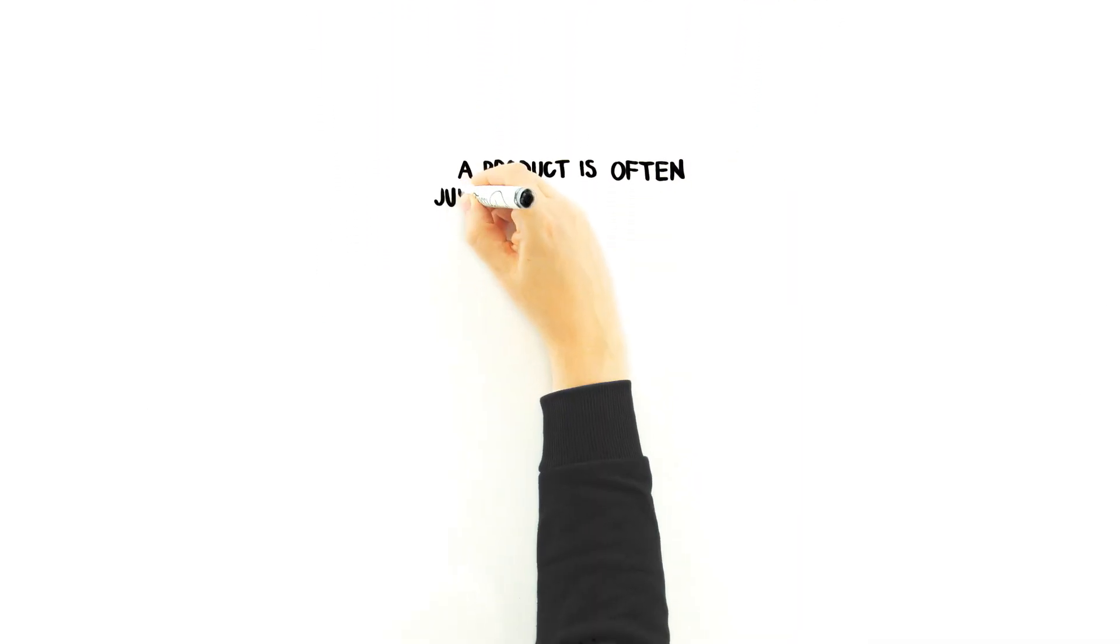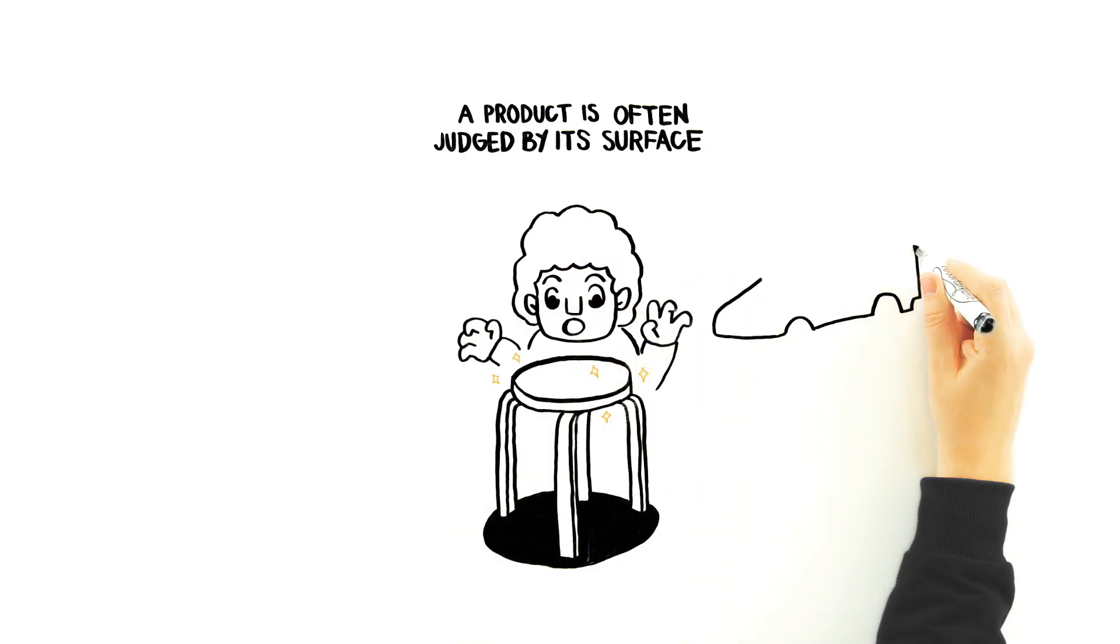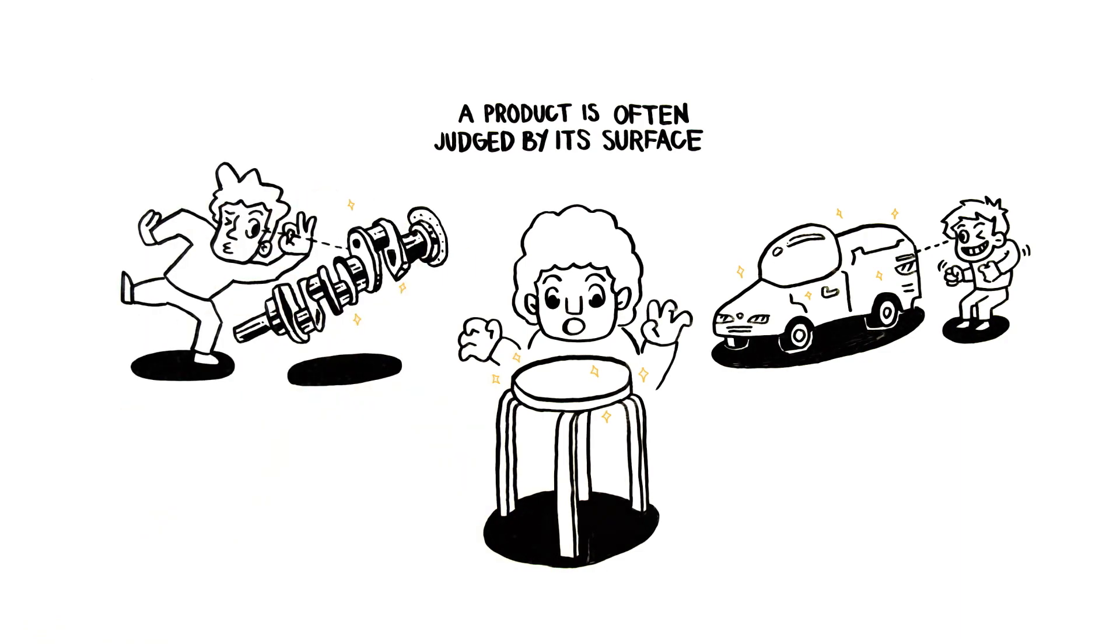A product is often judged by its surface, a unique piece of furniture, the shining paint of a new car, or the immaculate finishing of a crankshaft surface.